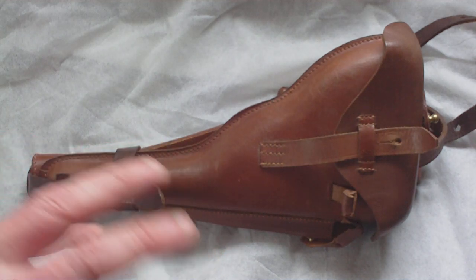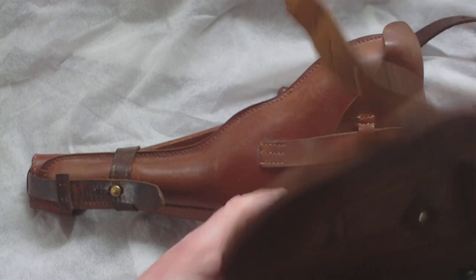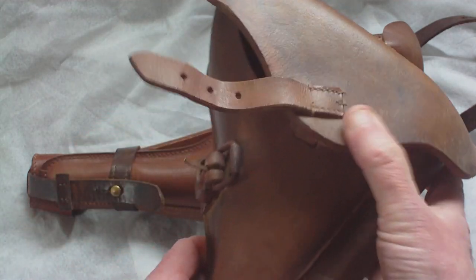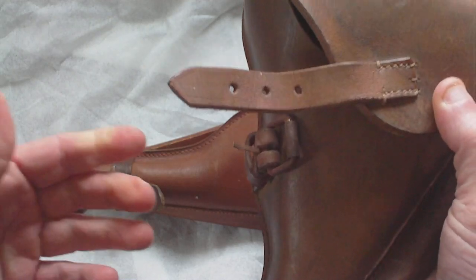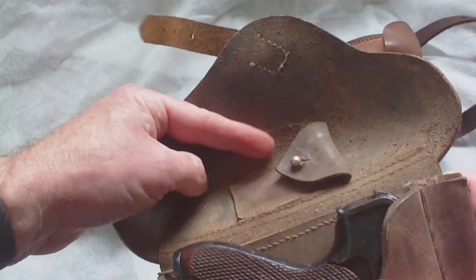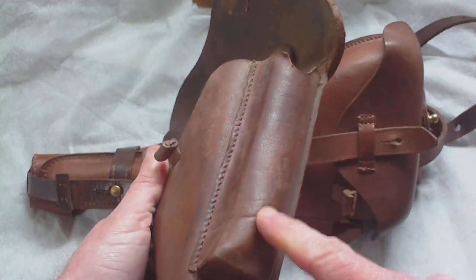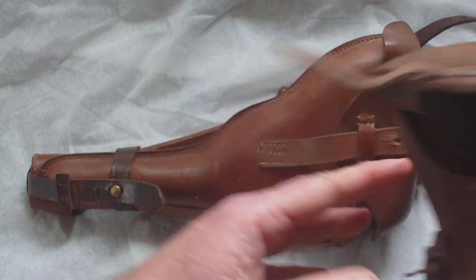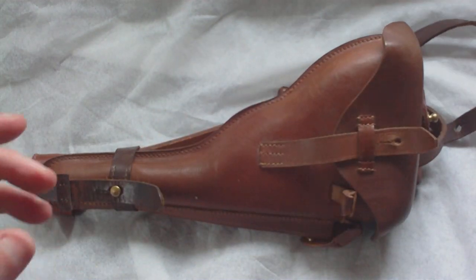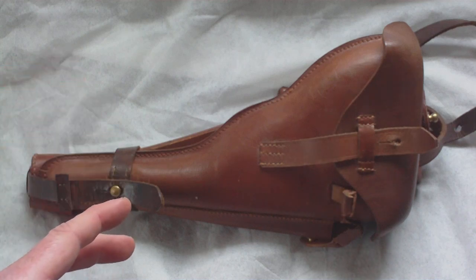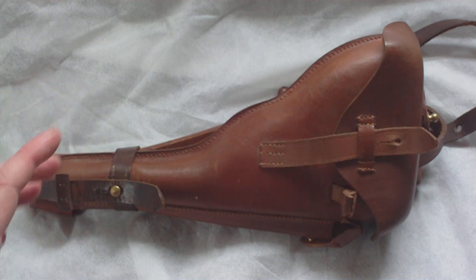A regular four-inch Luger holster looks similar in setup, but where your normal four-inch Luger holster has the strap, buckle, takedown tool pouch, spare mag pouch, and loops so it can be worn on the belt, the artillery Luger does not have any provision to be worn on the belt. It has no belt loops.